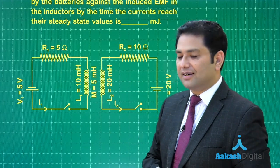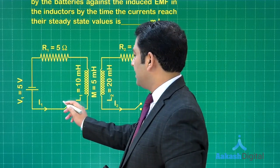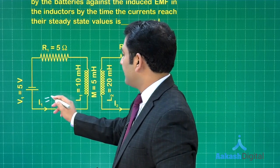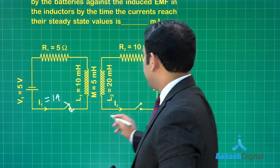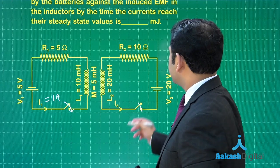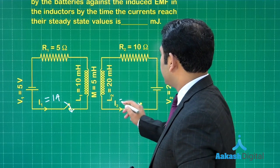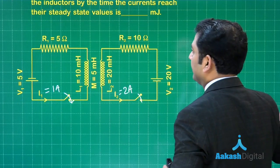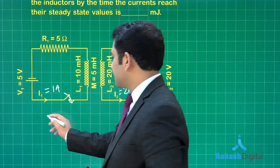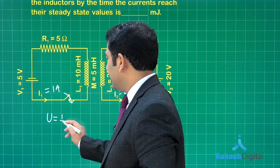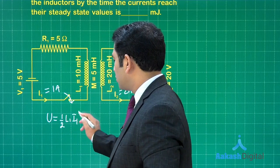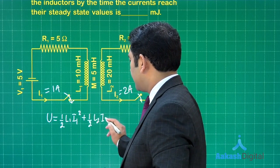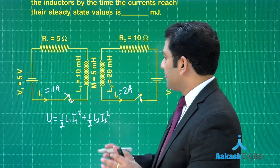Let us see how much will be the steady state current. i1 is equal to 5 by 5, that is 1 ampere, and i2 is 20 by 10, that will be 2 ampere. All done. Now you require the expression for total energy: half l1 i1 square plus half l2 i2 square. These are the self energy, but together there is also mutual inductance and the mutual energy is m i1 i2.